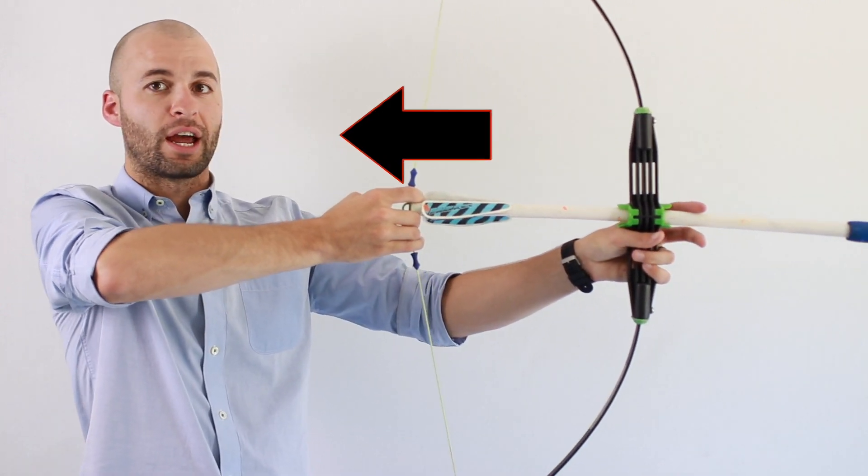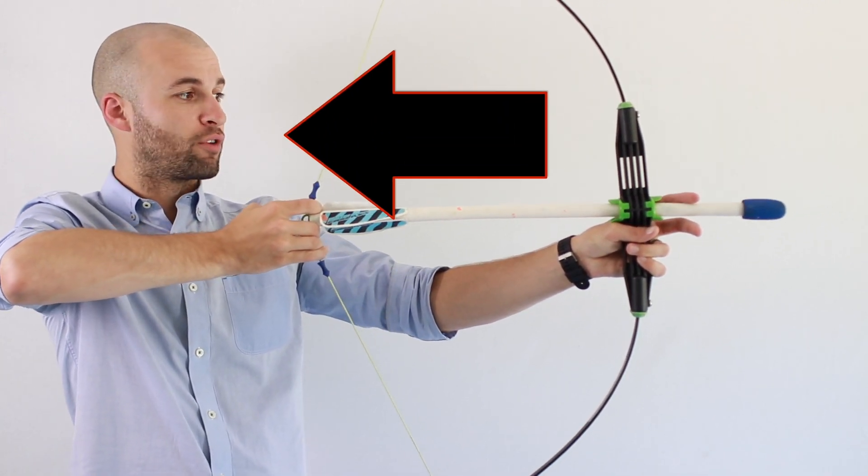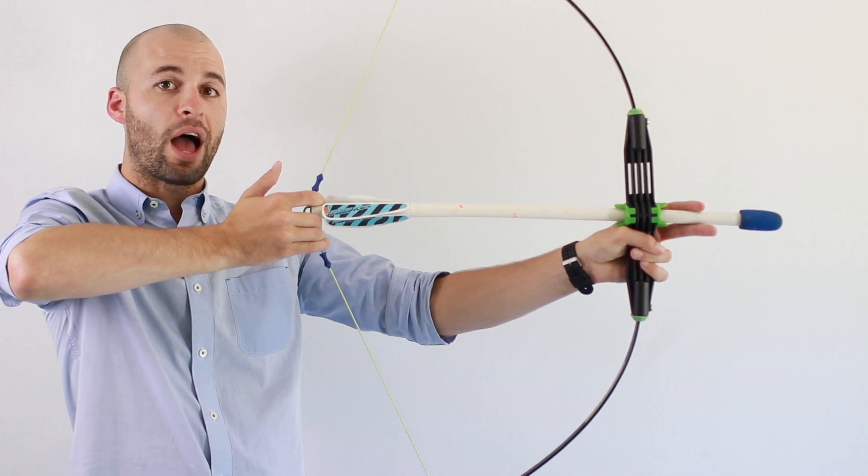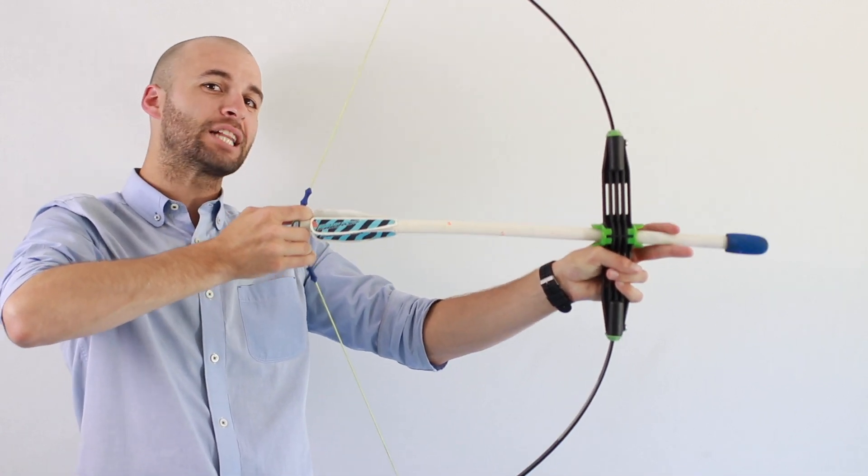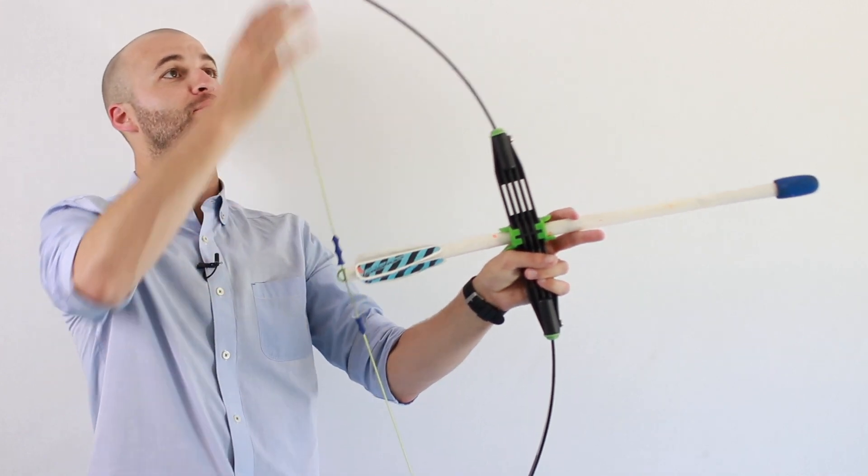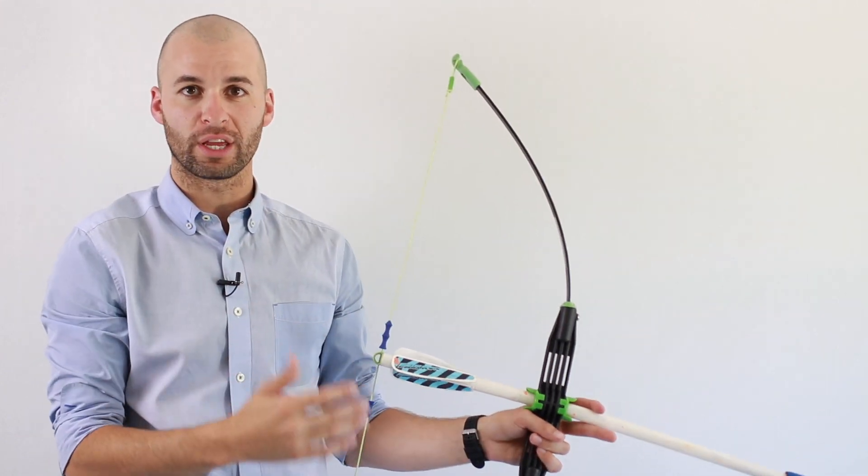If I apply a force and I actually stretch it over a given distance, now I have done work, and the amount of work that I have done is exactly equal to the amount of potential energy that was stored in the bow.